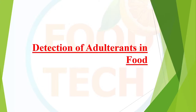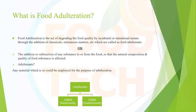Let's start with the first slide. Food adulteration is defined as the act of degrading the food quality, either incidentally or intentionally, through the addition of chemicals, extraneous matter, etc., which are called food adulterants. It also includes the addition or subtraction of any substance to or from food, so that the natural composition and quality of the food substance is affected.